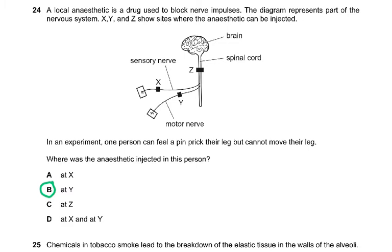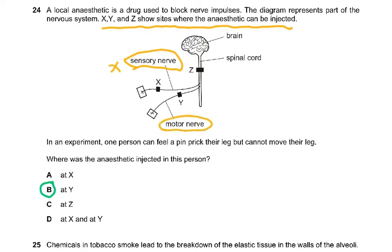Question 24 is a nightmare for some students. A local anesthetic is a drug used to block nerve impulses. The diagram represents part of the nervous system. X, Y, and Z show sites where the anesthetic can be injected: X is the sensory neuron, Y is the motor neuron, and Z is the spinal cord. If you know the functions of sensory, motor, and spinal cord connections, only then can you answer this question.